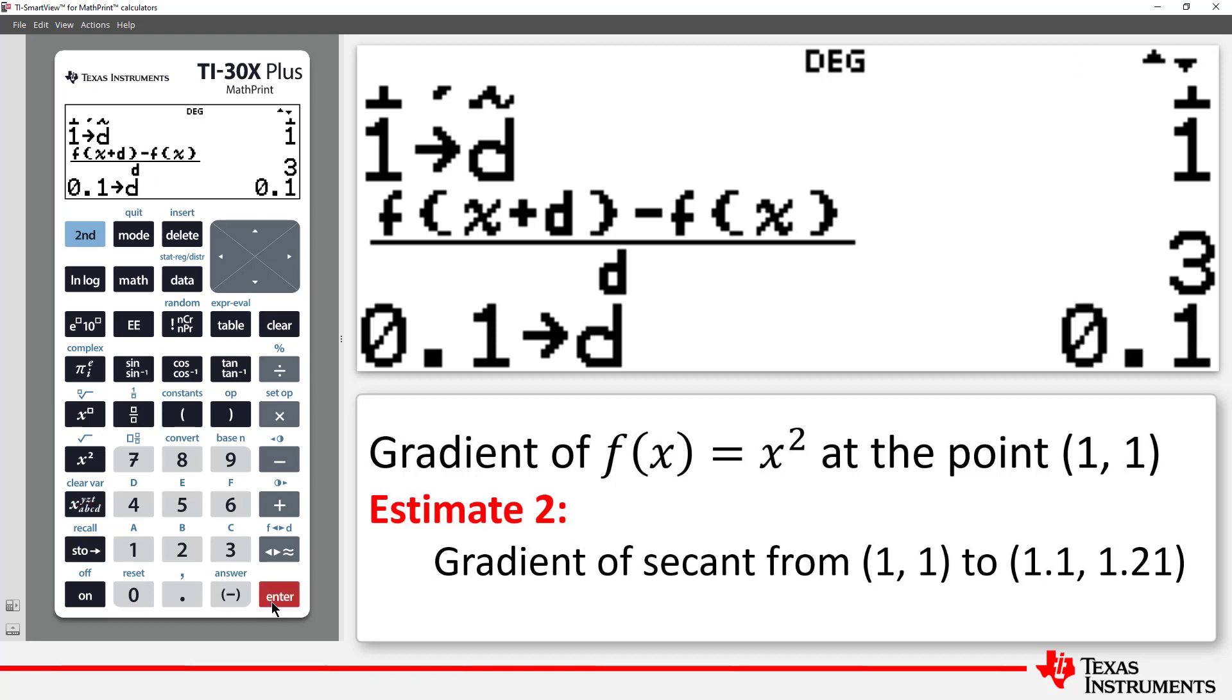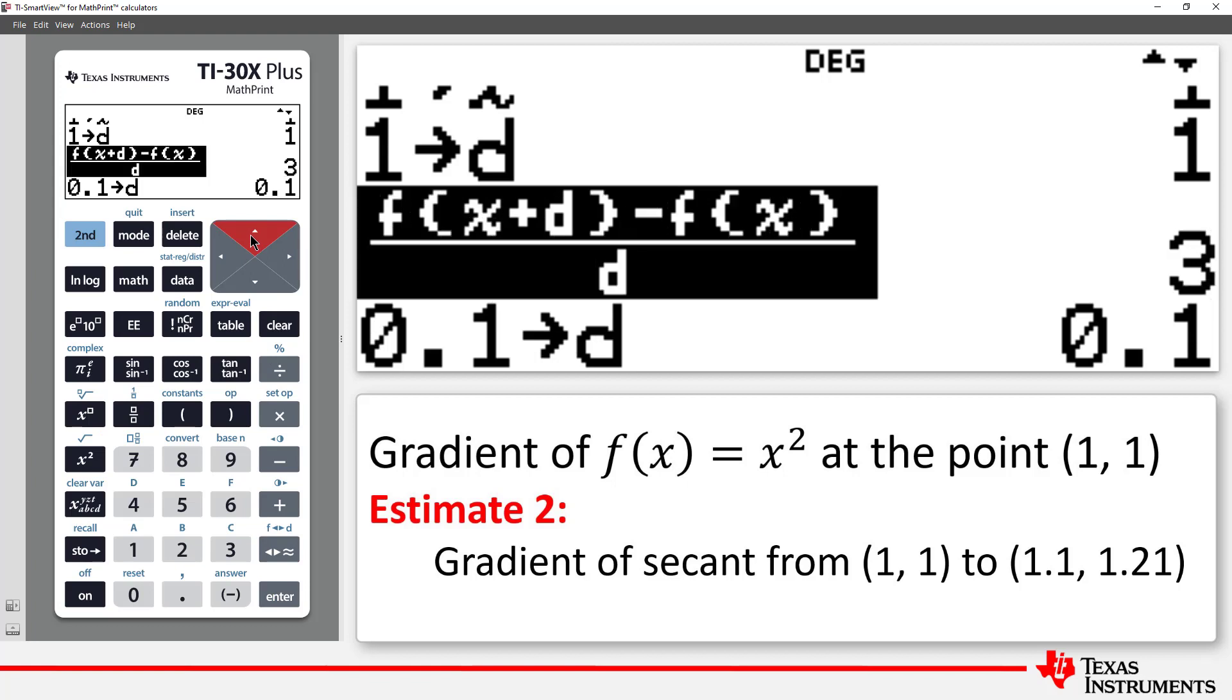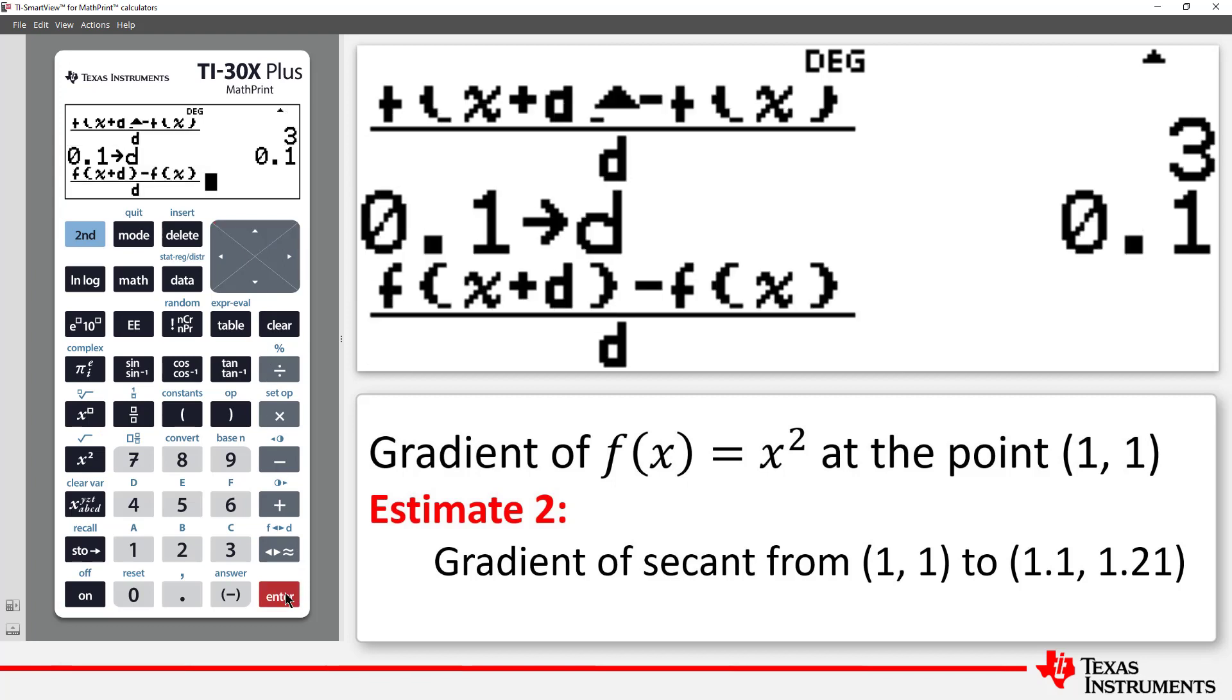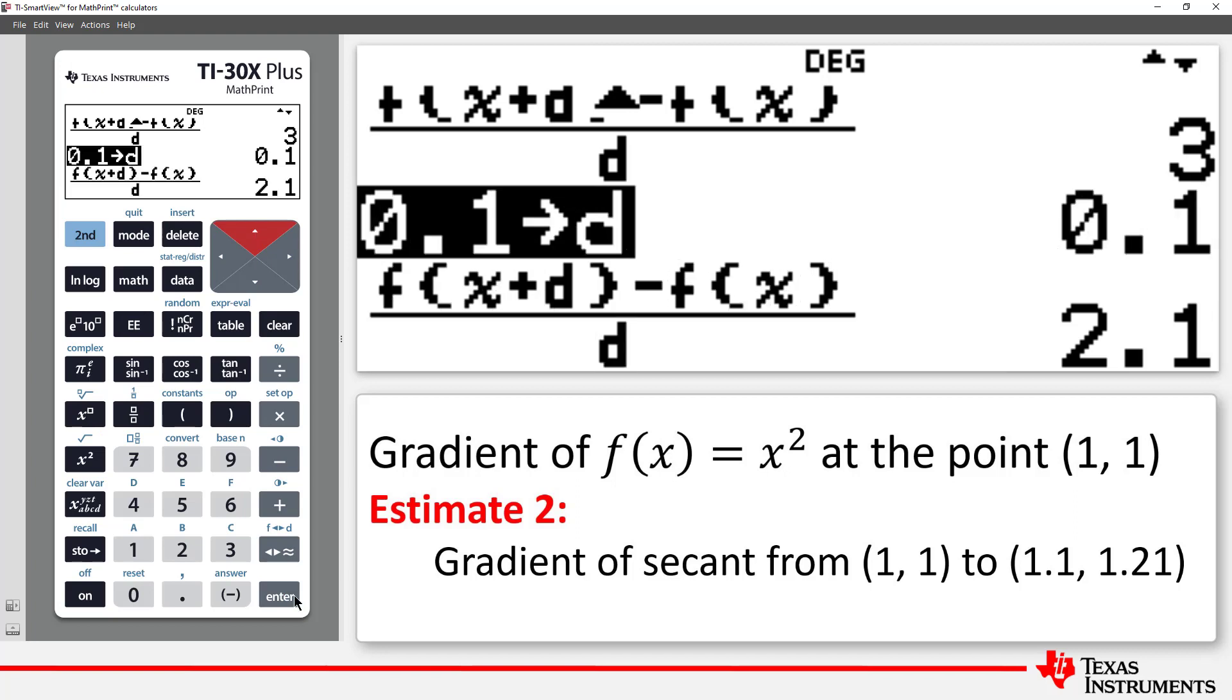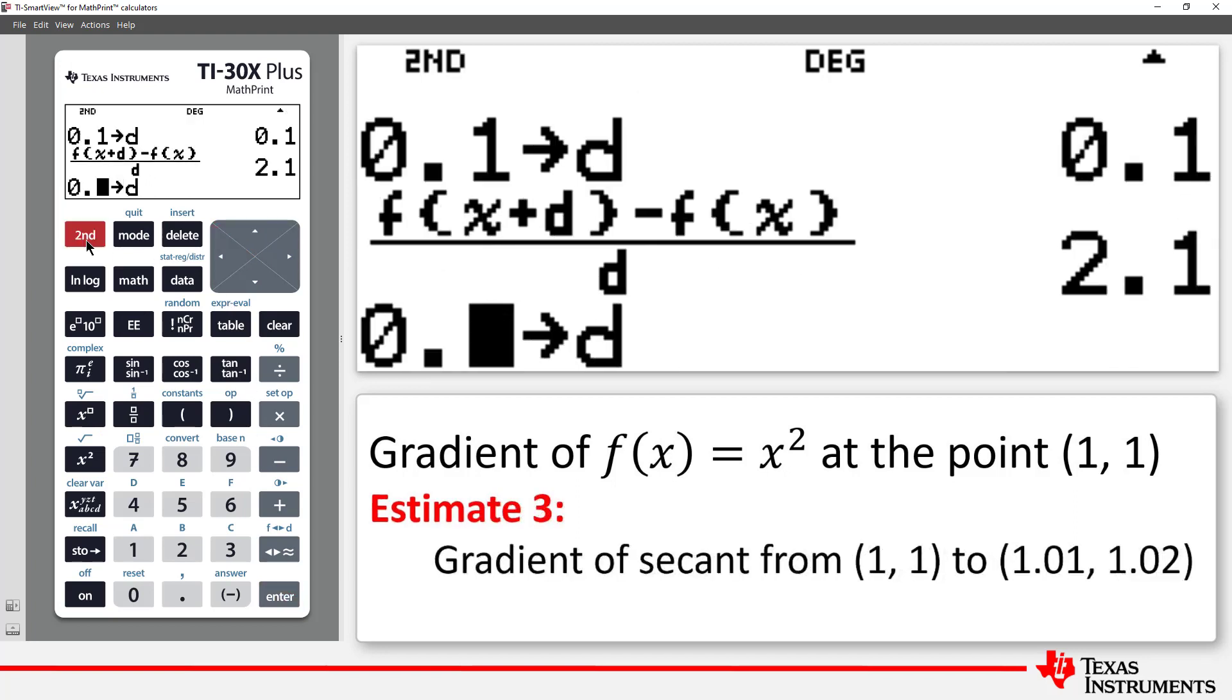Now we can copy and paste the gradient of the secant, and see that the new gradient is 2.1. Now let's try a smaller value for d. We're getting closer and closer to 0.